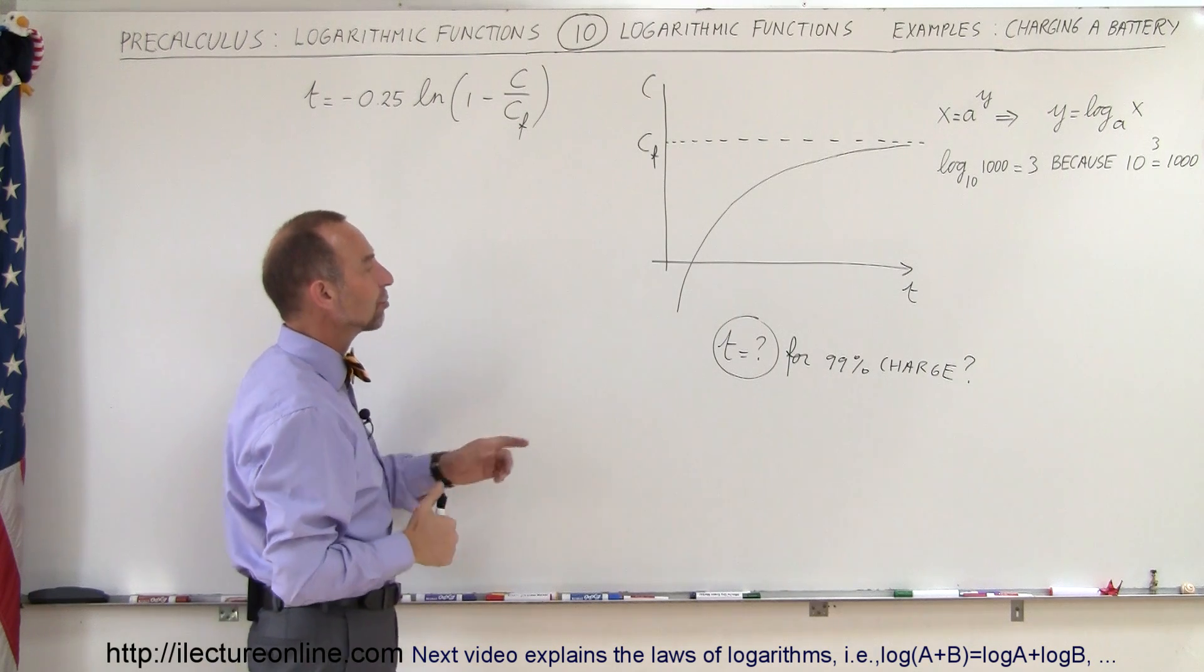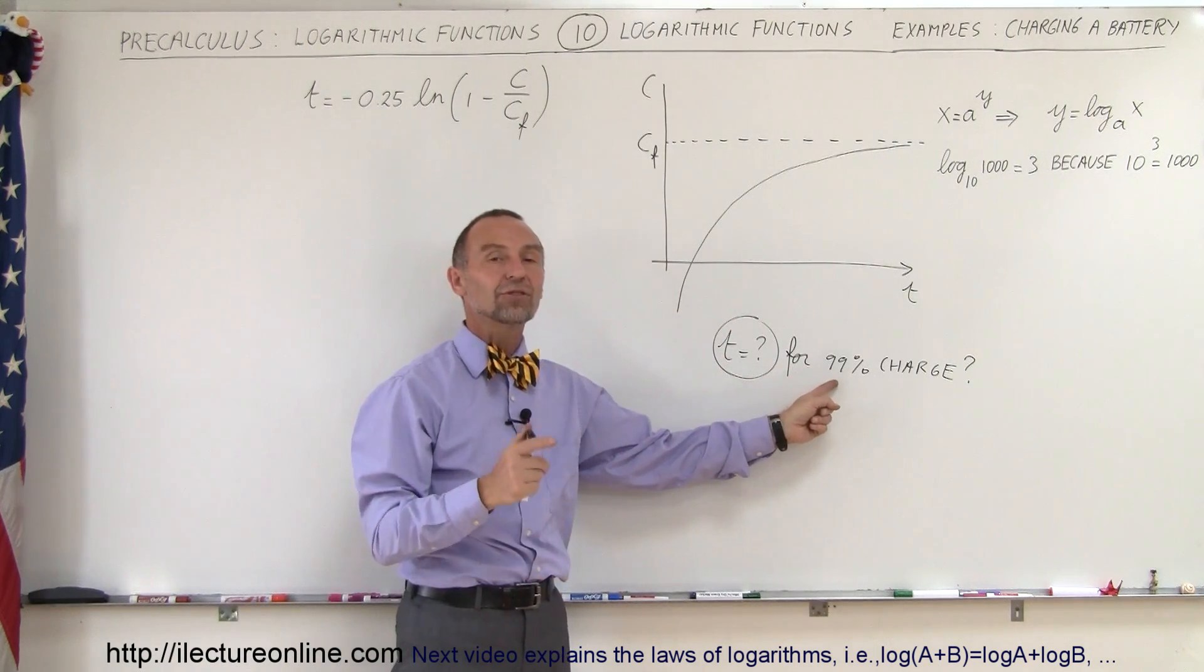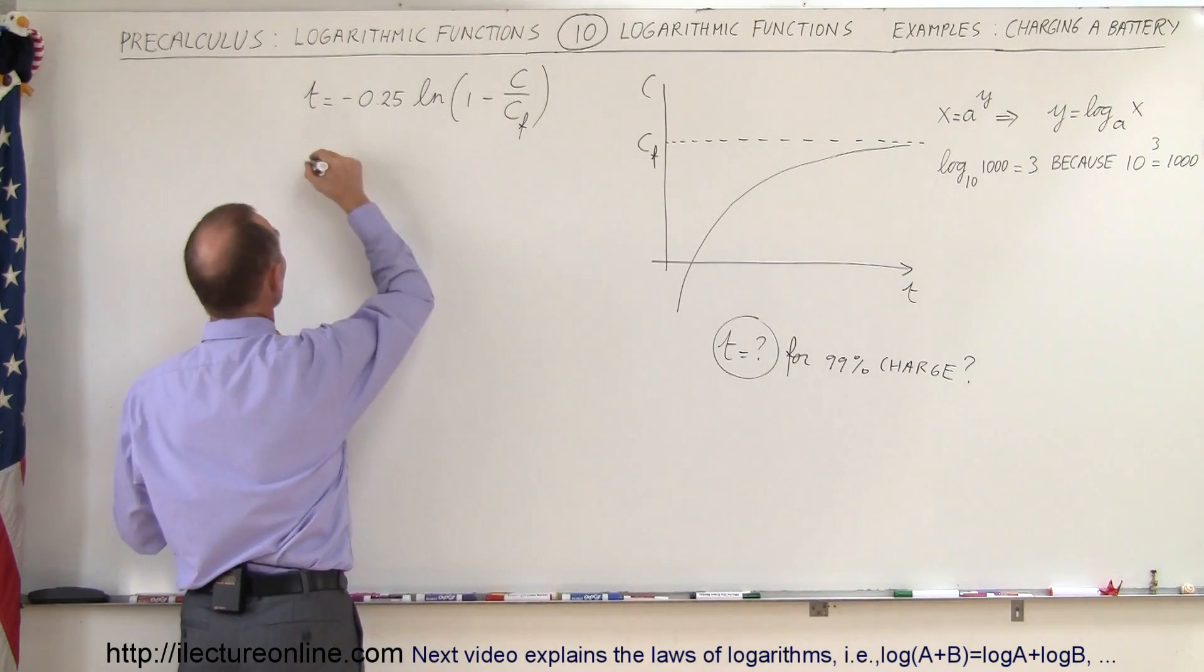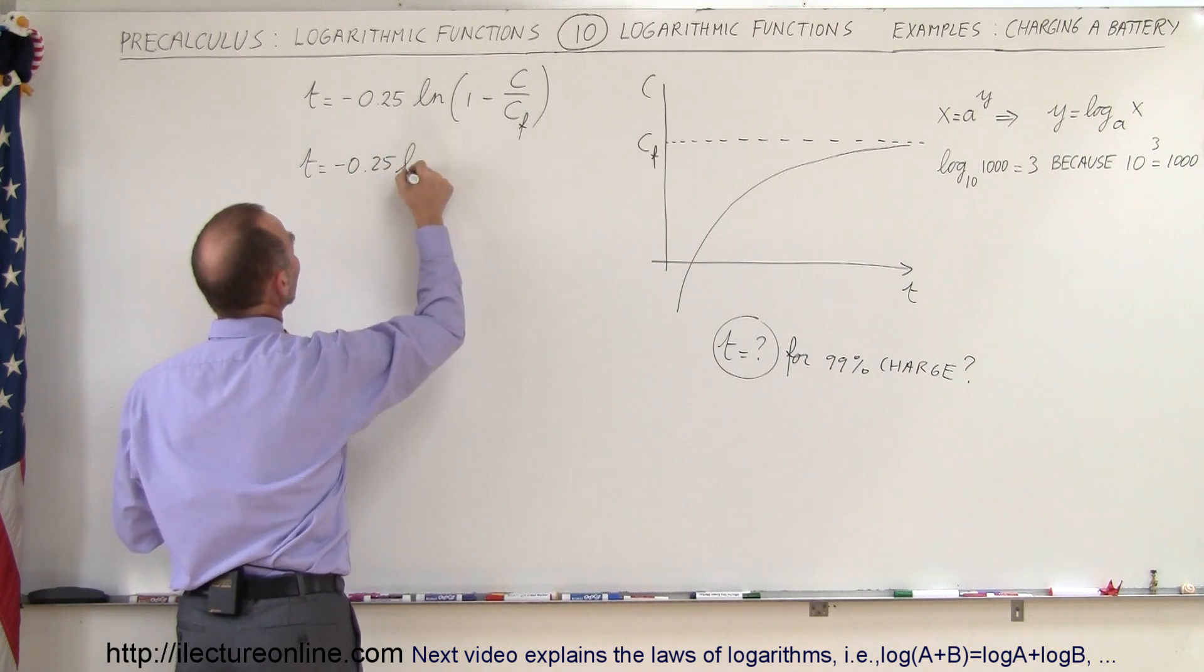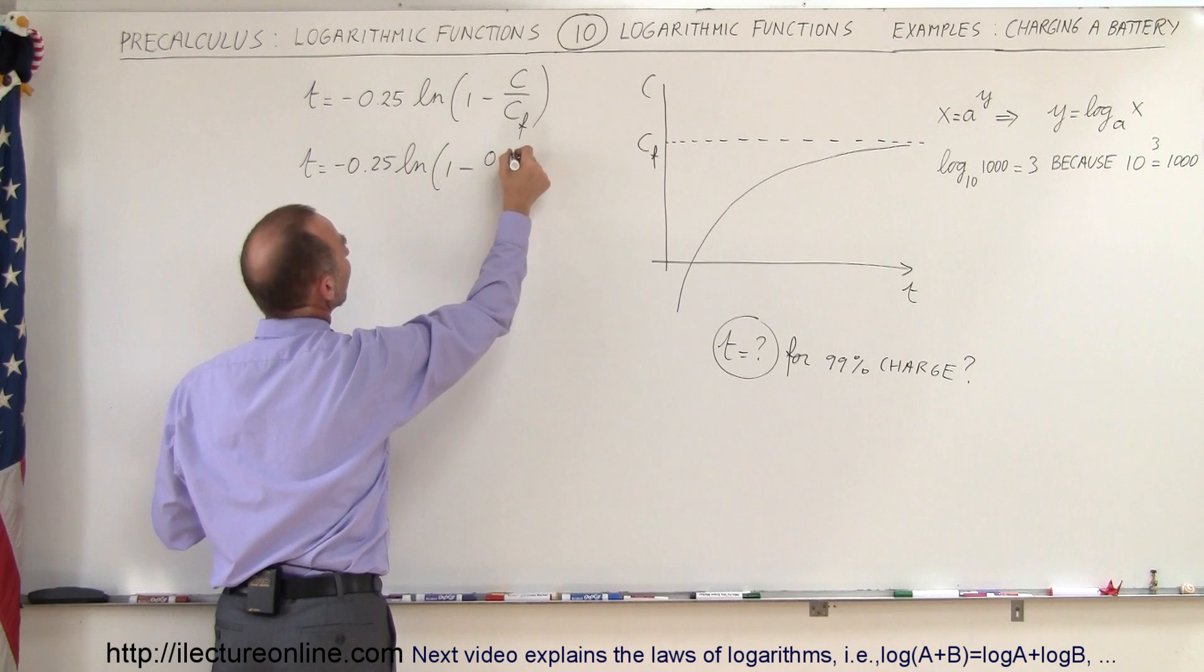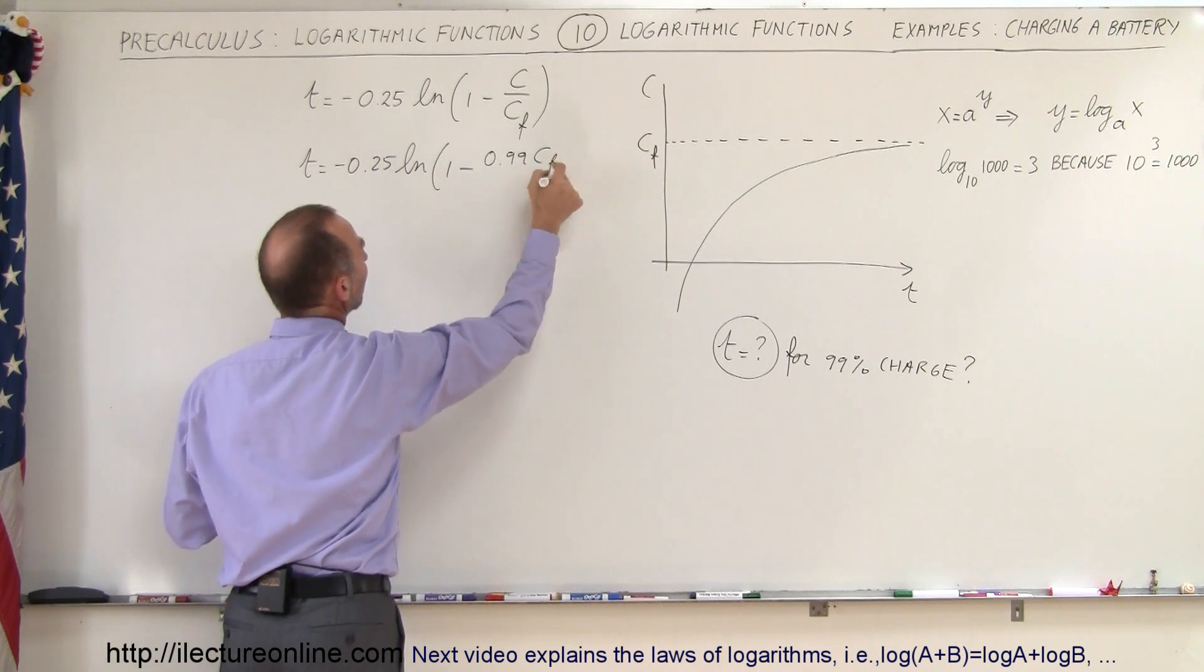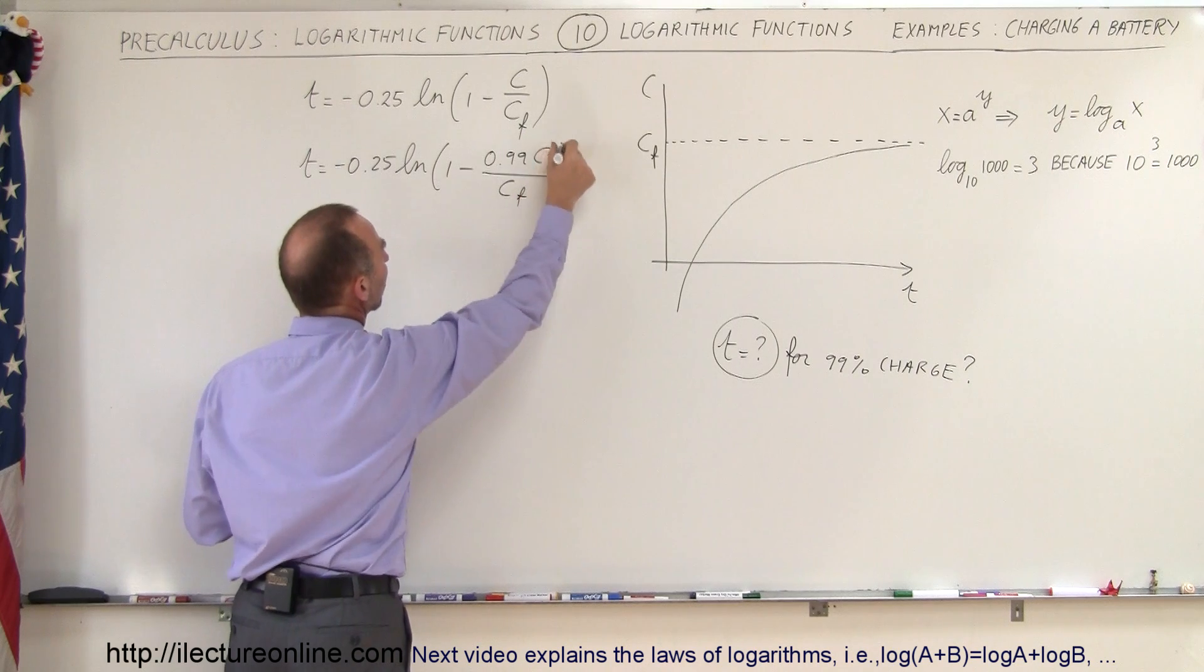Let's say we want to figure out how long it will take for this battery to reach 99% of its final charge. The time in hours would be equal to -0.25 times the natural log of 1 minus c. Now c becomes 0.99c_final, that would be 99% of the final charge divided by the final charge.